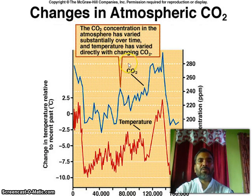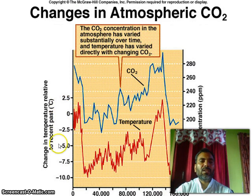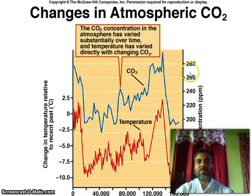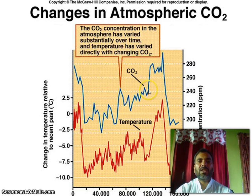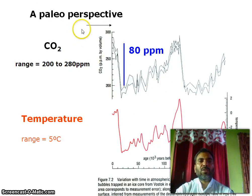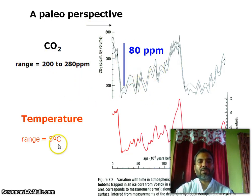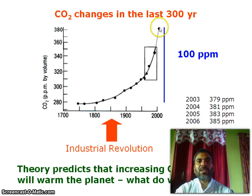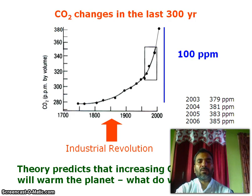Looking at the graph for changing atmospheric CO2: the x-axis shows change in temperature relative to the recent past (in degrees Celsius) and CO2 concentration in PPM. CO2 concentration in the atmosphere has varied substantially over time and temperature has varied directly with changing CO2. Will perspective CO2 range: 200 to 280 PPM corresponds to about a 5°C temperature range. CO2 changes in the last 300 years show the graph going sharply upward. Theory predicts that increasing CO2 will warm the planet.